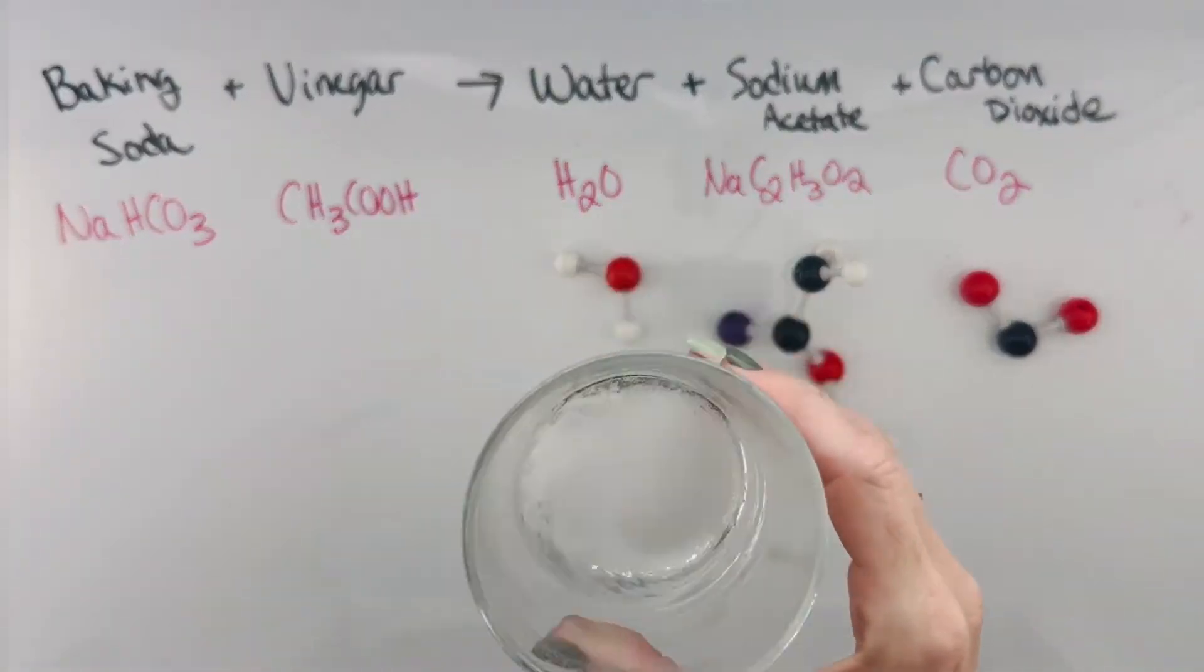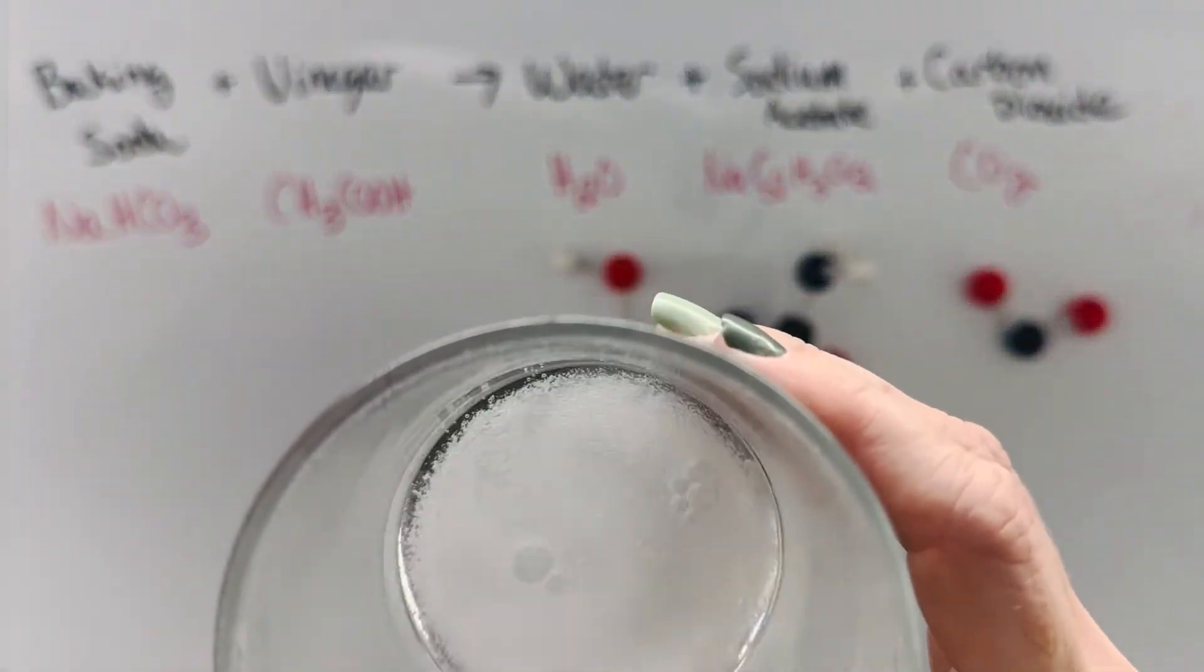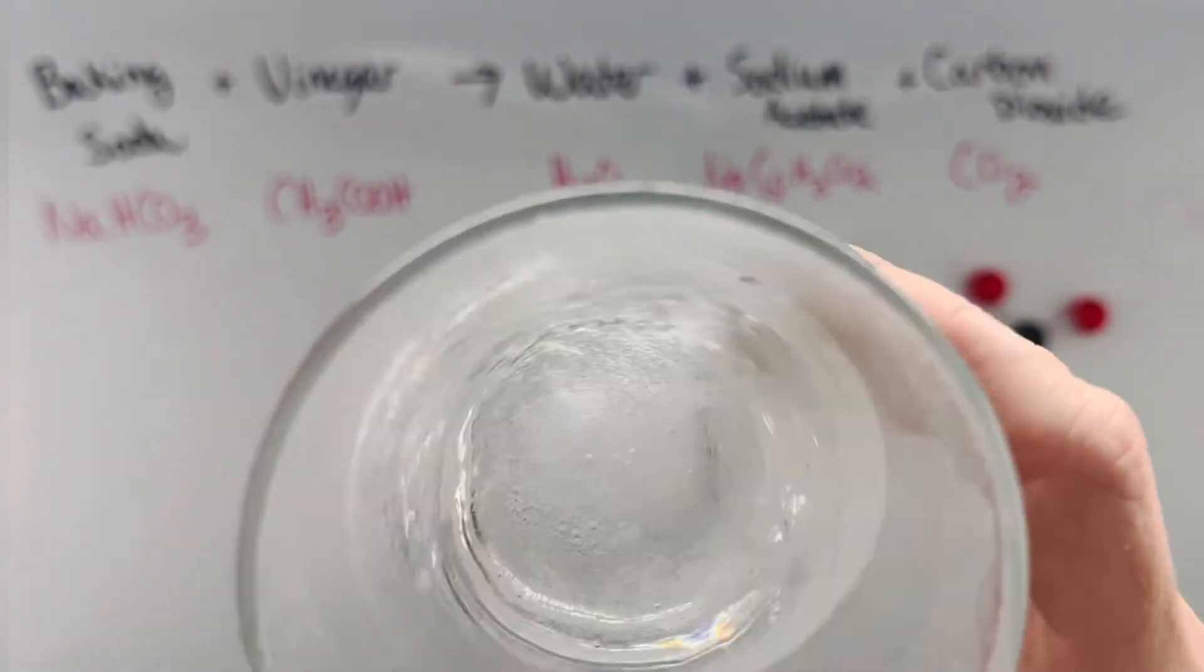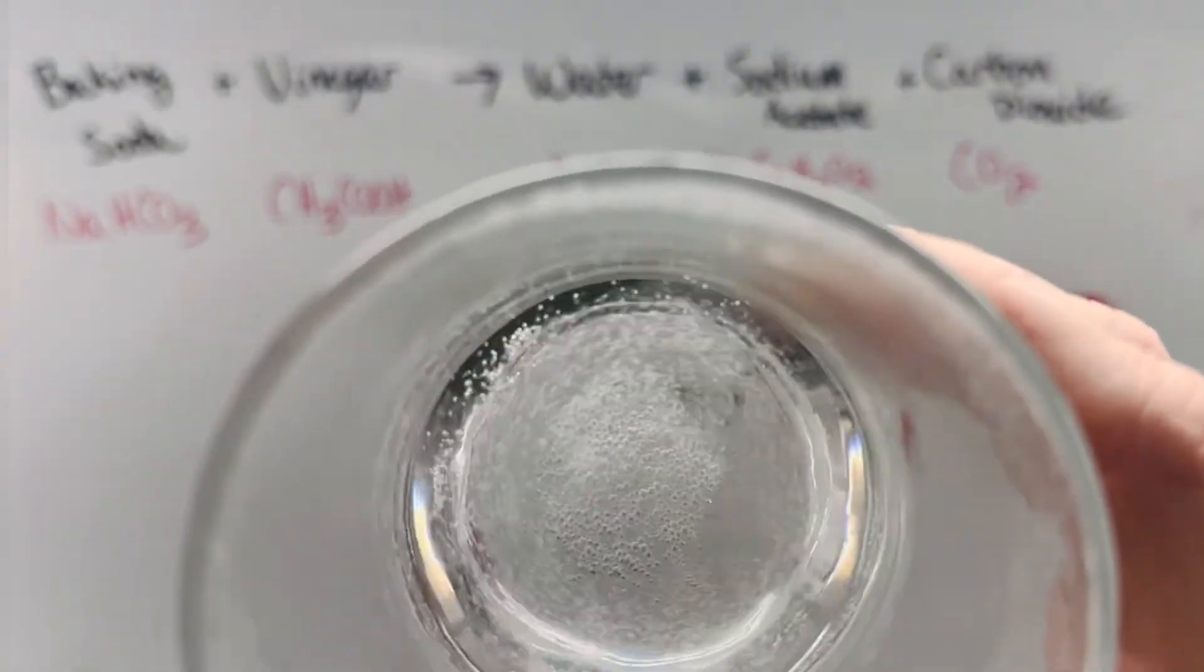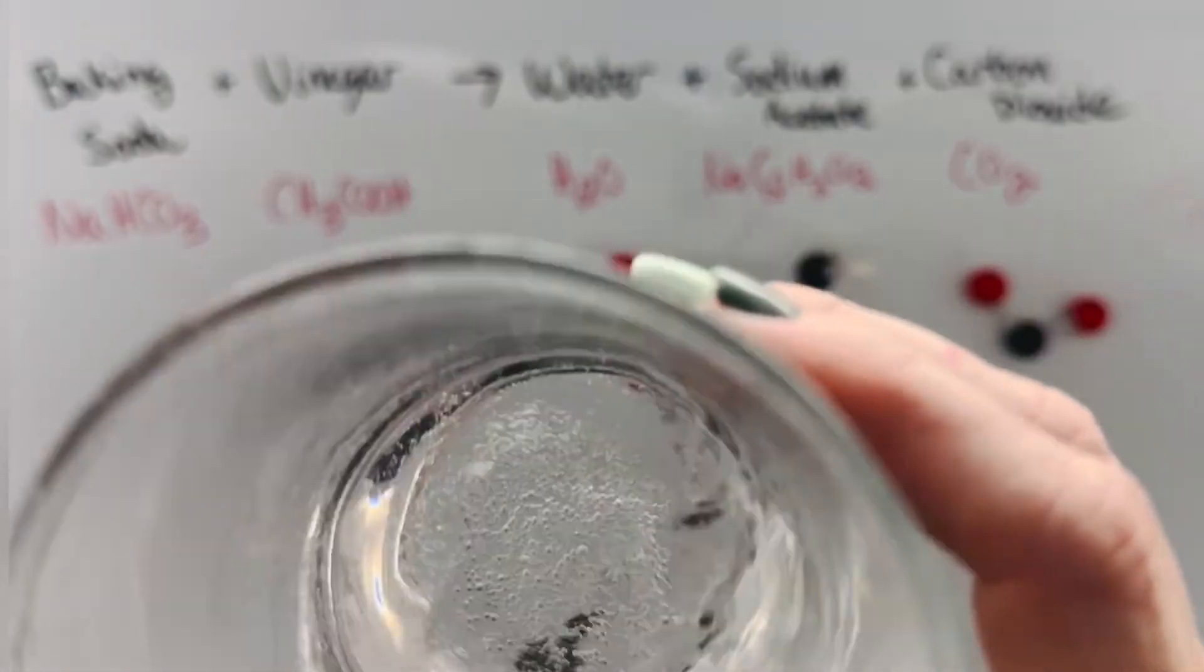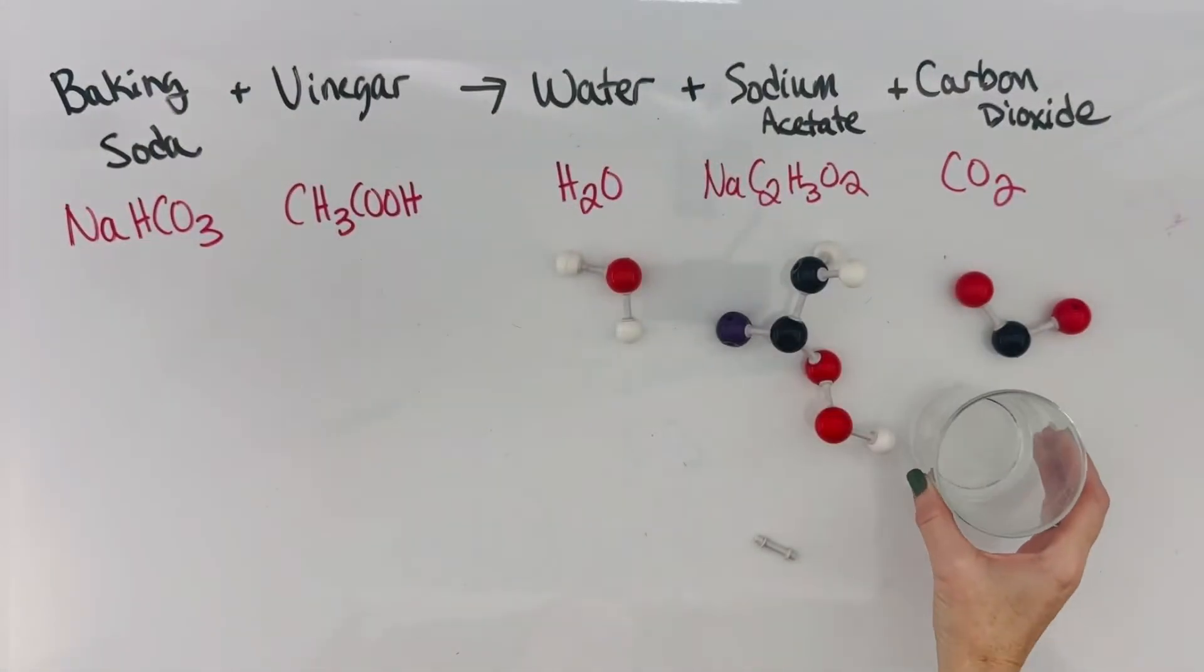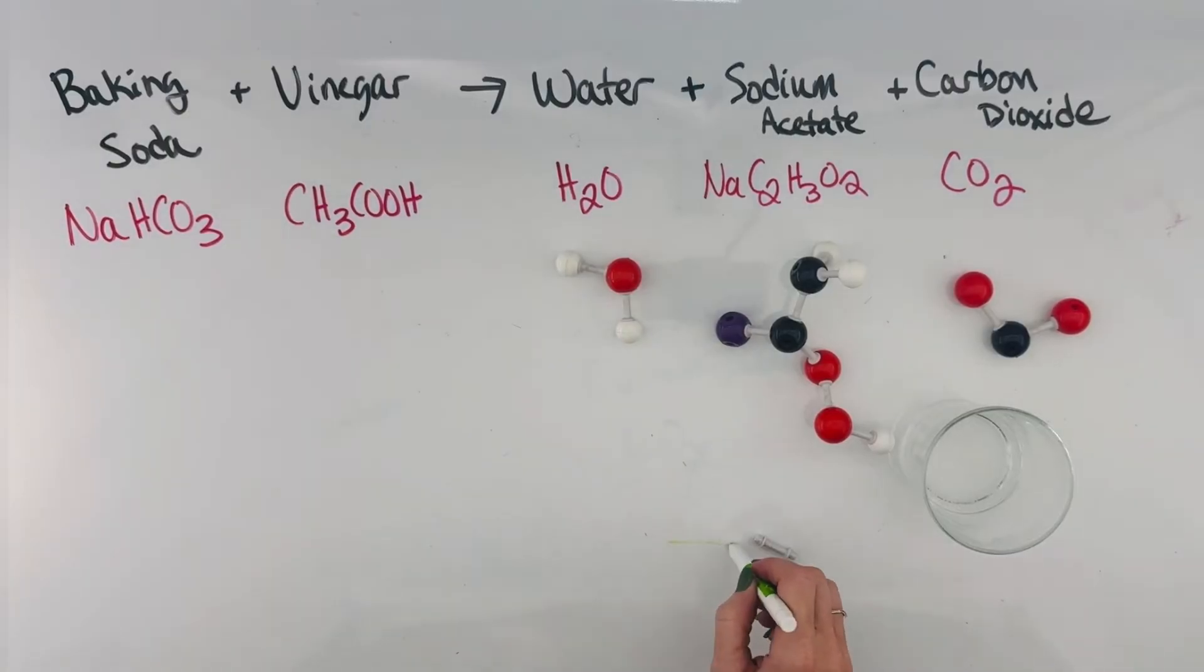That reaction takes a little while to happen as all of those original molecules have to break apart and rearrange into the new substances that are formed. And so at the end here in this glass, we no longer have vinegar and baking soda. We have water, sodium acetate, and all the carbon dioxide bubbles bubbled off.